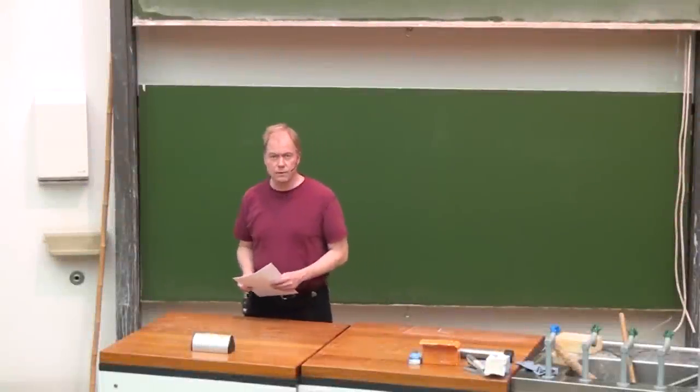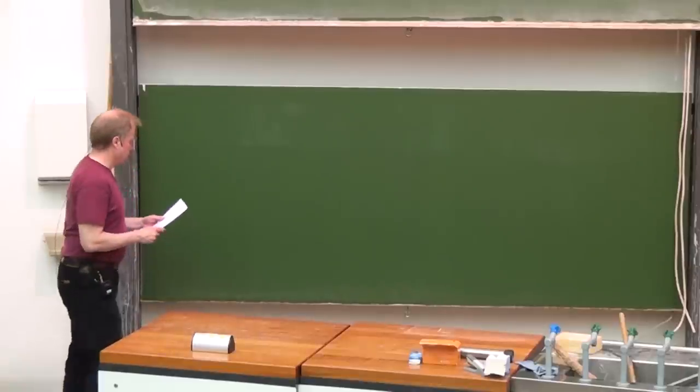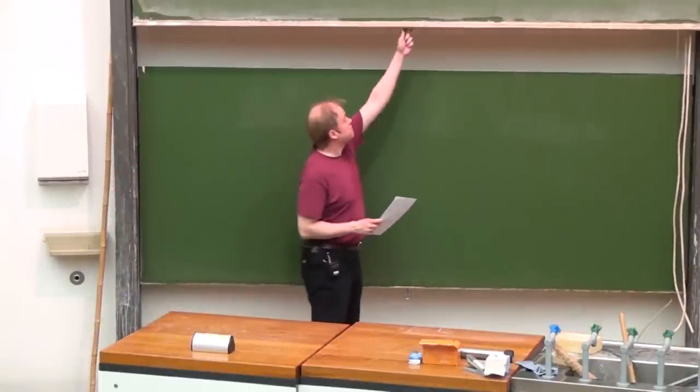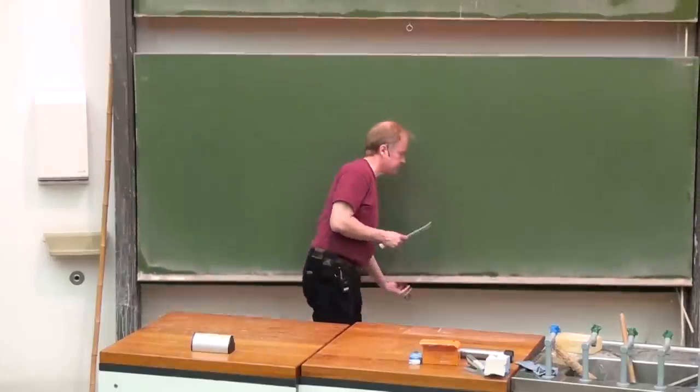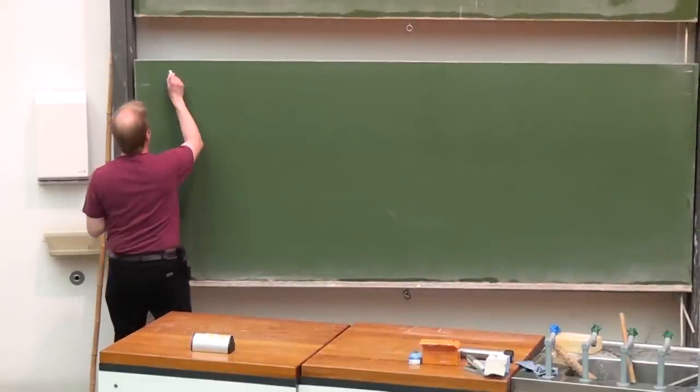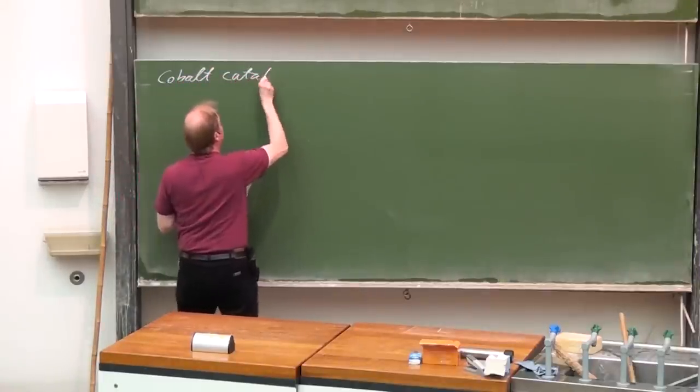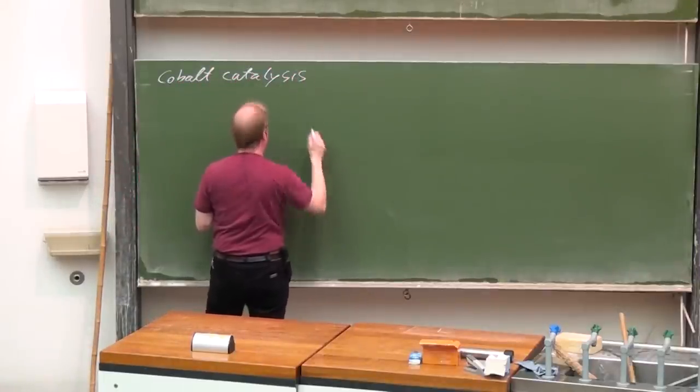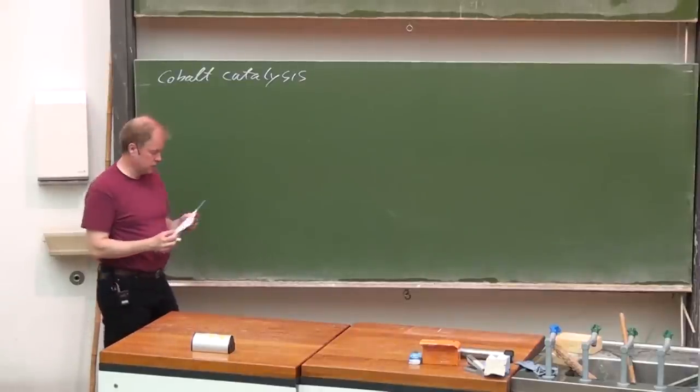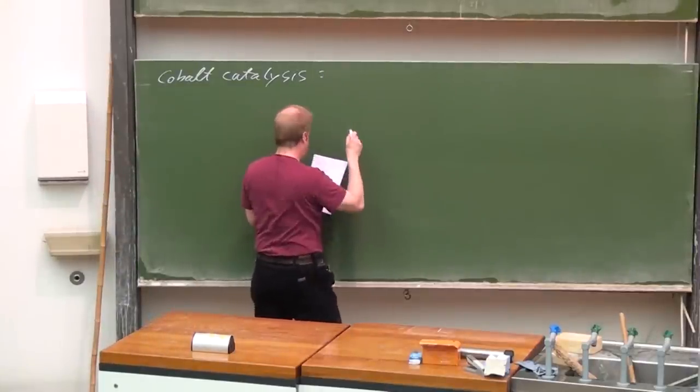So let's start with part 21 of the lecture on catalytic organometallics. Subject of today is cobalt catalysis with special emphasis on the cyclotrimerization of alkynes.